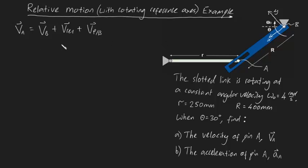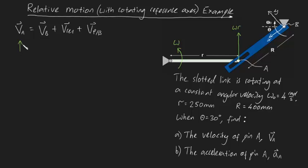Before we get into the mathematics, let me show you what's happening conceptually. Because this blue link is moving upwards, it forces this link to also move upwards, so let's assume the angular velocity of this link is counterclockwise at this instant. Under that assumption, because point A is a pin on this link, the velocity of A will be purely upwards from circular motion — magnitude omega·r — and we know its direction.